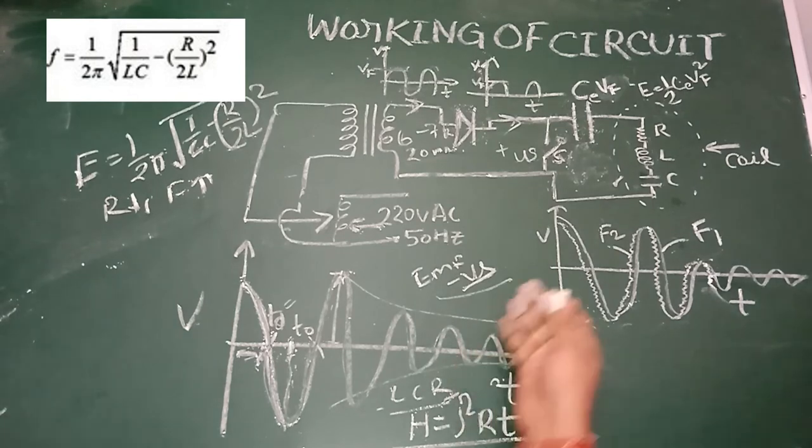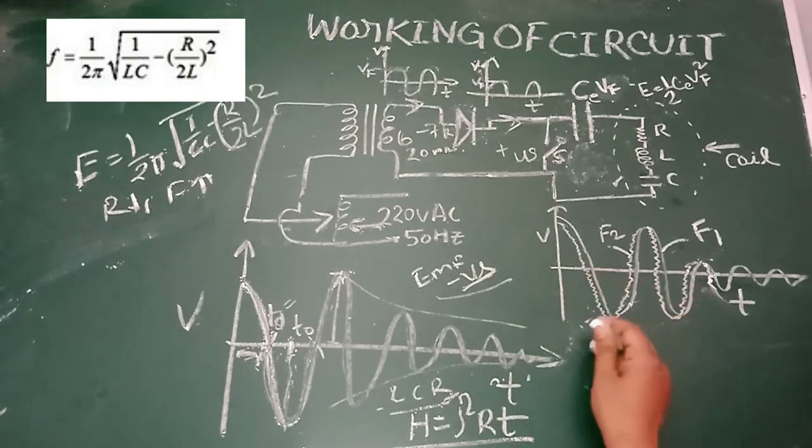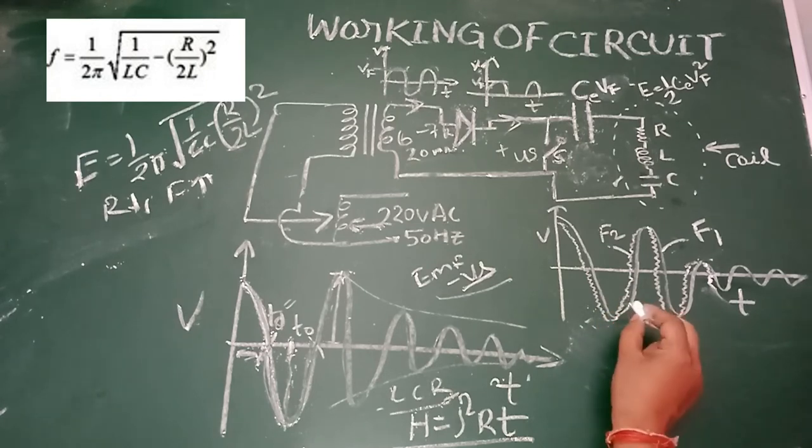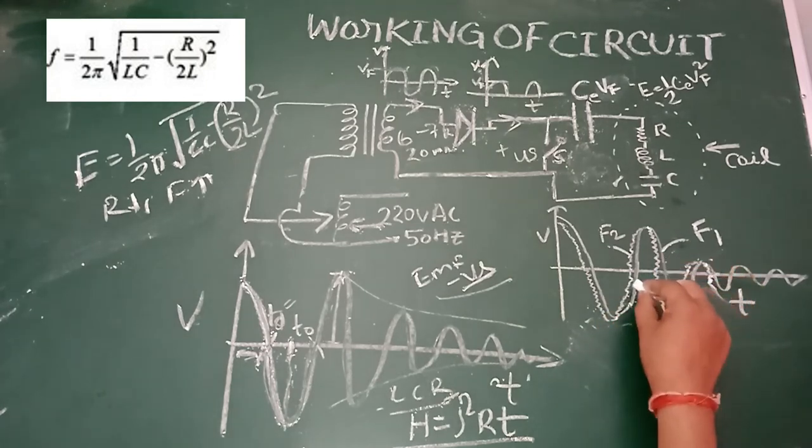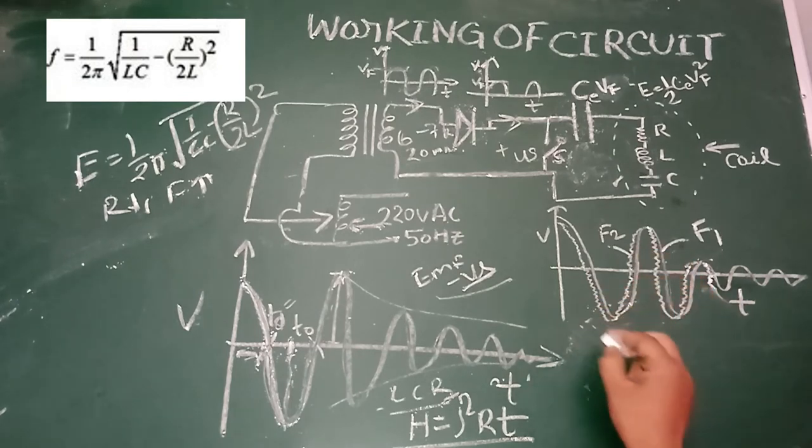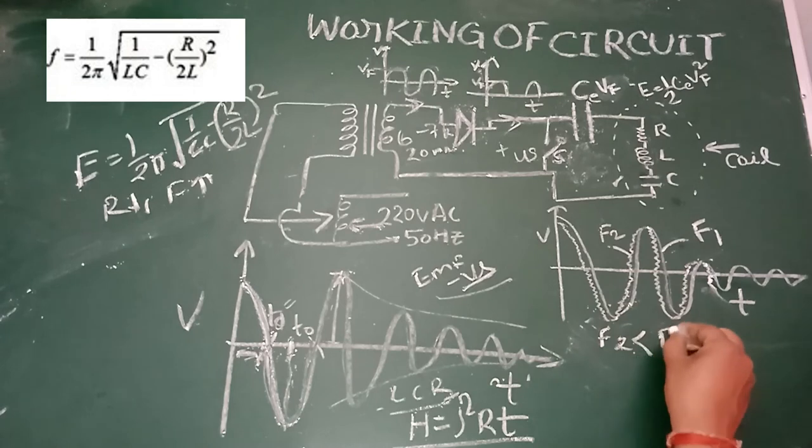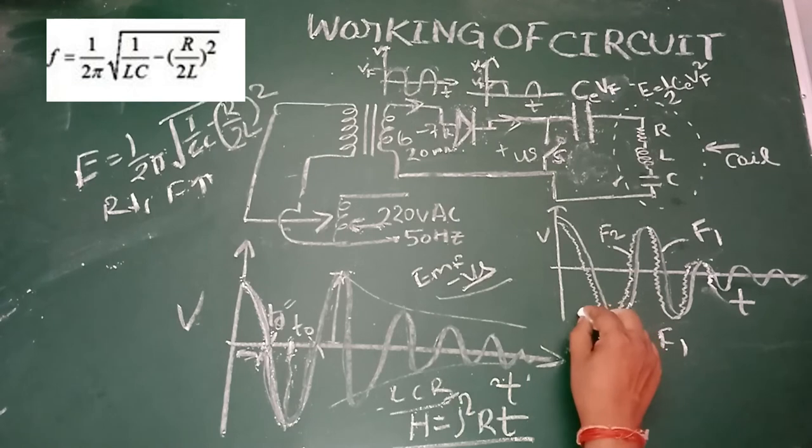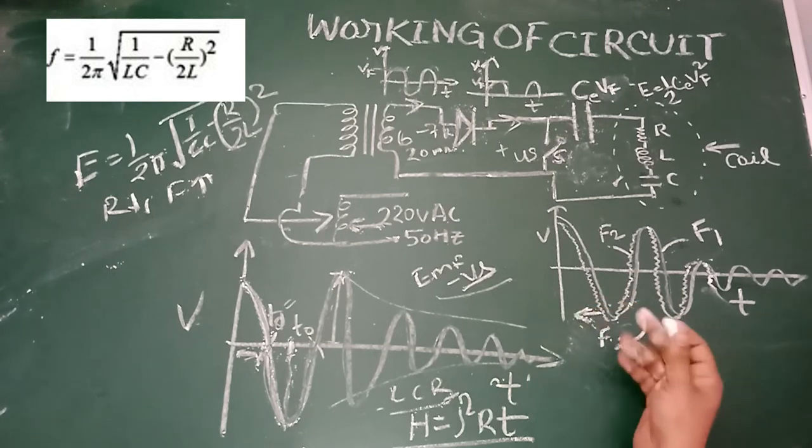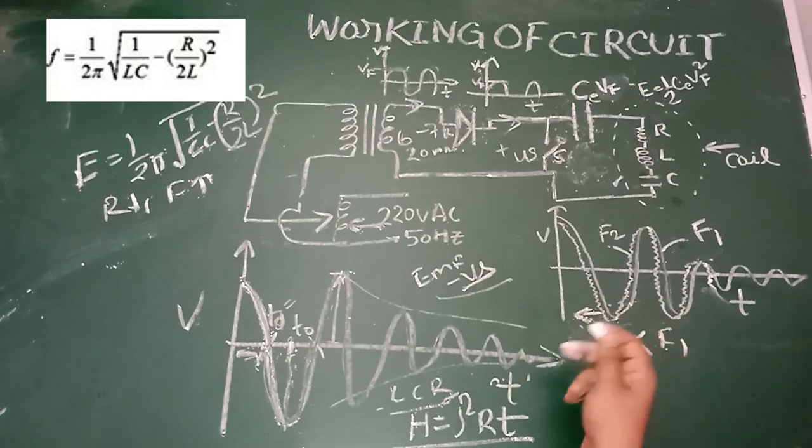If we plot a graph with different frequencies, then it will look like this. Here this waveform is for frequency f1 and this waveform for frequency f2, and f2 is less than f1. That means waveform with frequency f2 will be shifted to the left side with respect to waveform f1. That means if frequency will be changed due to changing the value of R, C and L, waveform of the damped oscillation will be shifted accordingly.